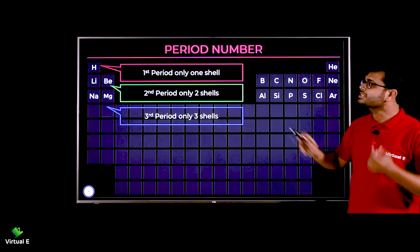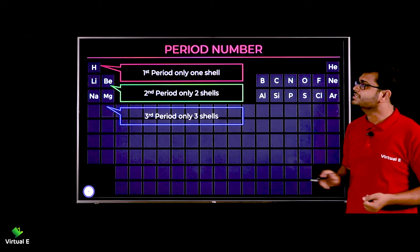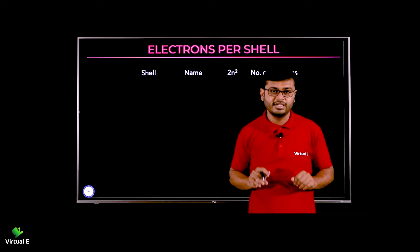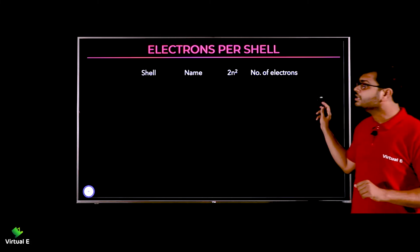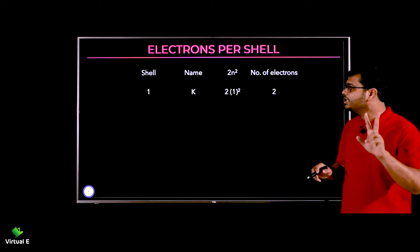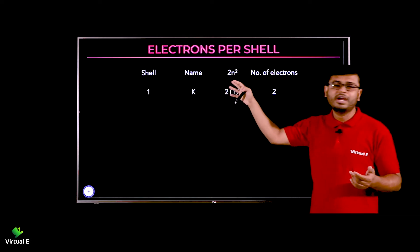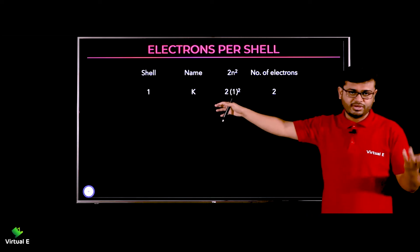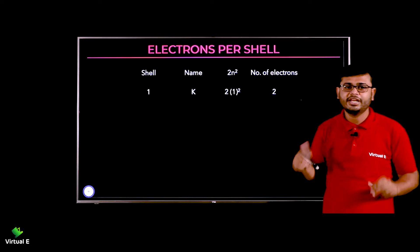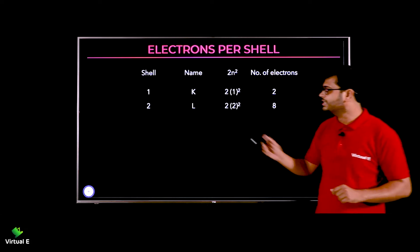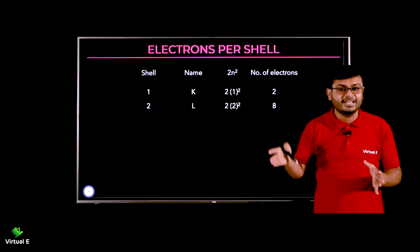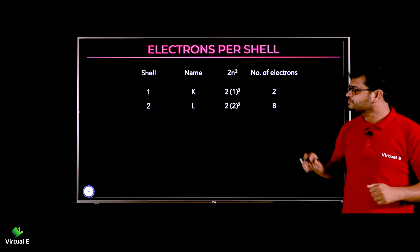Now let's discuss electrons per shell — ek shell mein kitne electrons aa sakte hain, uski capacity. The first shell is the K shell. The formula is 2n². For the first shell: 2 × 1² = 2 electrons. For the second shell: 2 × 2² = 8 electrons — which matches the 2, 8, 8 electron configuration we wrote in grade nine.